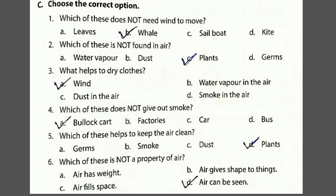Then third: what helps to dry clothes? Options: wind, water vapor in the air, dust in the air, or smoke in the air. Wind helps to dry clothes, so the answer is option A, wind. Then fourth: which of these does not give out smoke? Options: bullock cart, factories, car, bus. Factories, cars, and buses all give out smoke. A bullock cart does not. So the answer is option A, bullock cart.